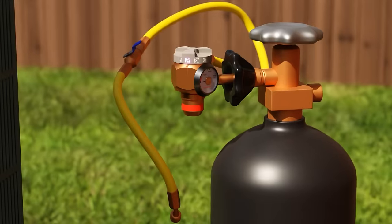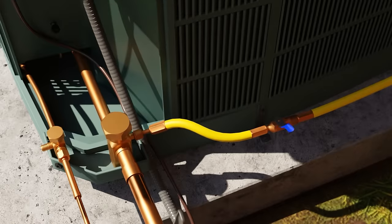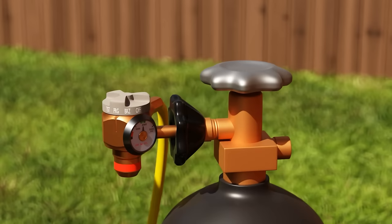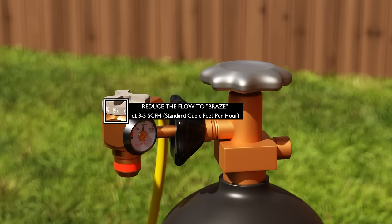Next, we purge the air from the system. Then we move it to brazing mode, or what we call flowing nitrogen while brazing, which flows a very slow amount of pressure, 3 to 5 SCFH, or standard cubic feet per hour.